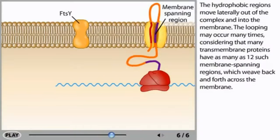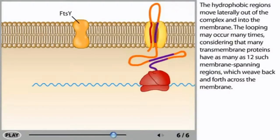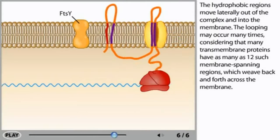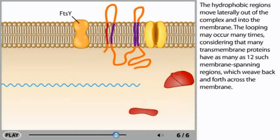The hydrophobic regions move laterally out of the complex and into the membrane. The looping may occur many times, considering that many transmembrane proteins have as many as 12 such membrane-spanning regions, which weave back and forth across the membrane.